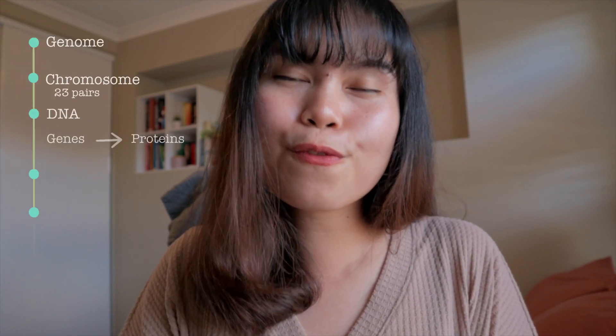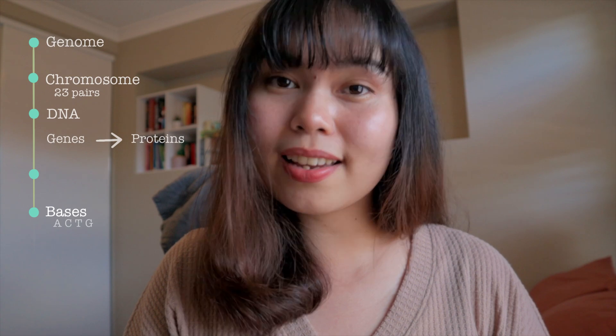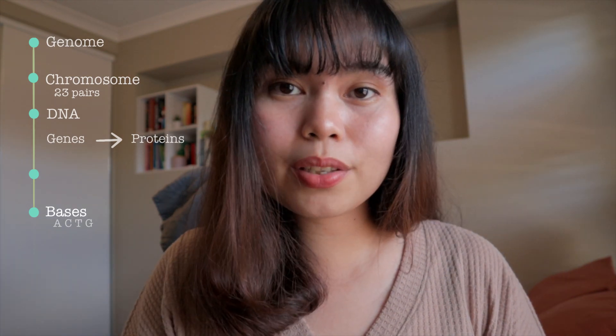The English language uses 26 letters in the alphabet, and some symbols too, like a period or a comma. The DNA, in comparison, uses only 4 letters or bases in its alphabet: A, C, T, and G. And the DNA only uses 3 of these letters or bases to form one word, called the codon.